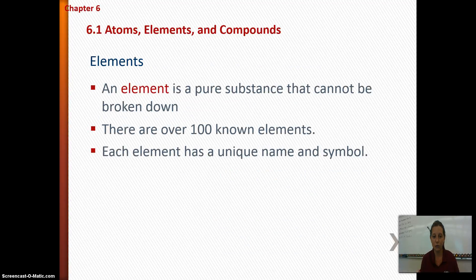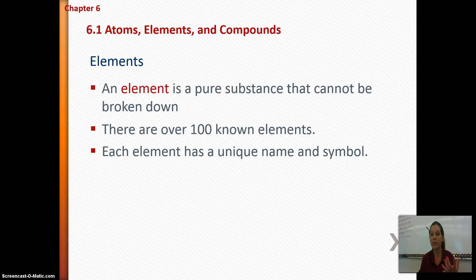You've heard of the periodic table of elements. An element is a pure substance that cannot be broken down — essentially, an element is an atom. The properties of atoms determine where they fall on the periodic table of elements. There are over 100 known elements, and each element has a unique name and symbol.